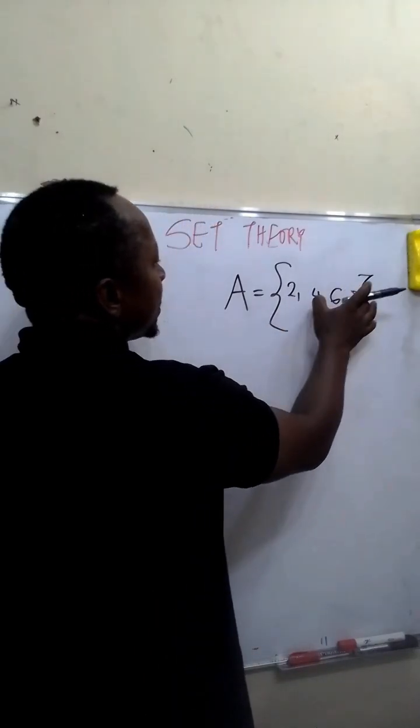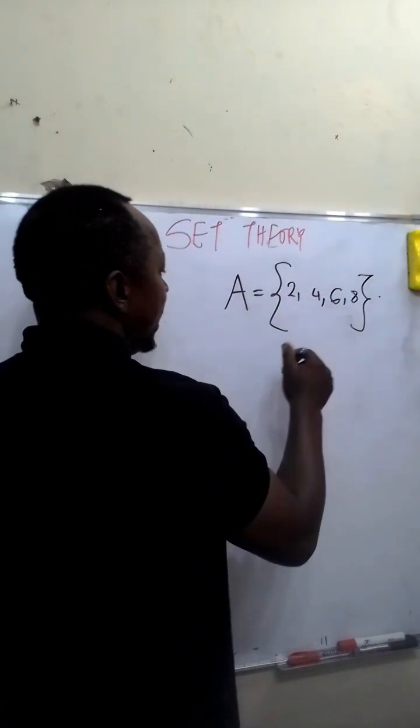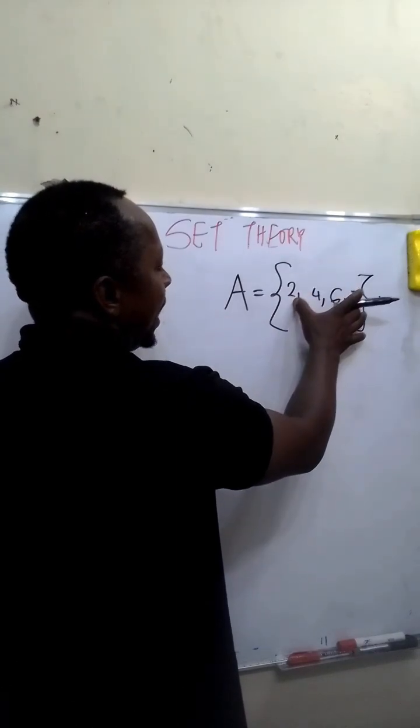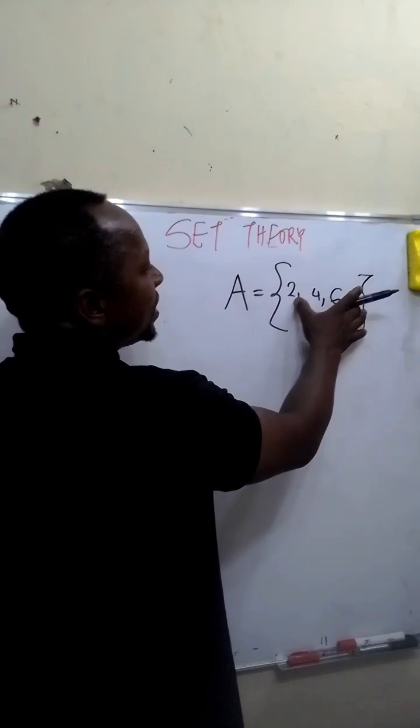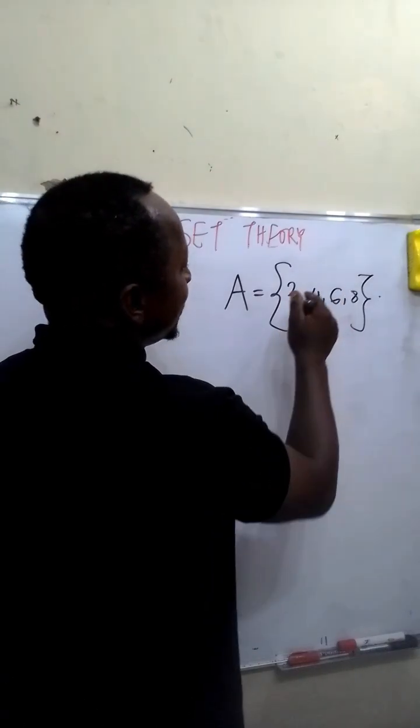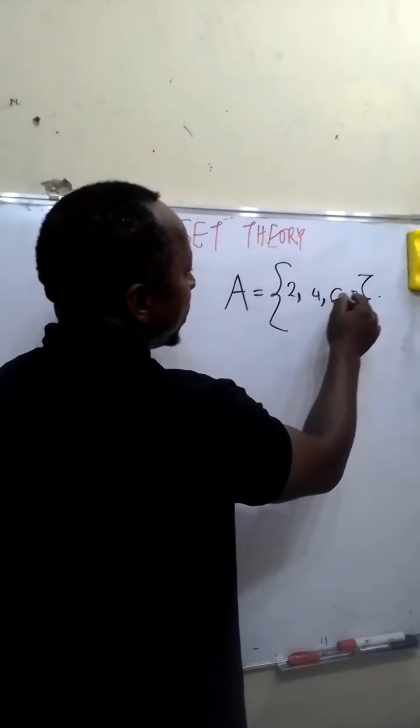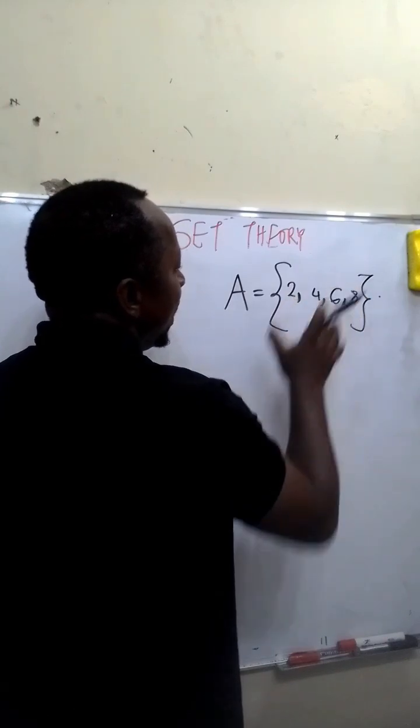2, 4, 6, and 8 are called elements. These are the elements of the set. And each of these elements are separated with a comma. We use commas to separate each of the elements.